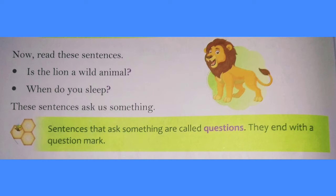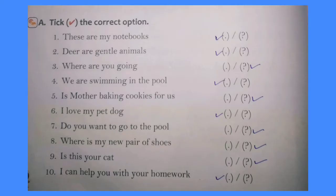Next one is questions. For example: 'Is the lion a wild animal?' 'When do you sleep?' These sentences ask us something. So the sentences that ask something are called questions. They end with a question mark. Read the sentences carefully and use the punctuation marks at the end. If it is a statement, we use a full stop; if it is a question, we use a question mark.